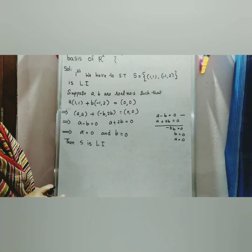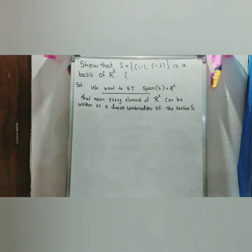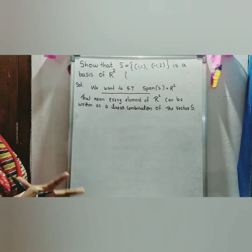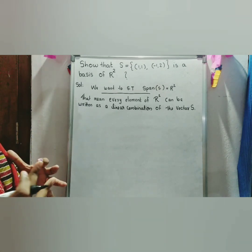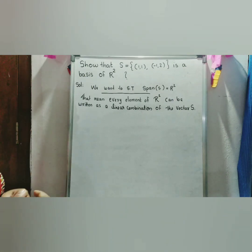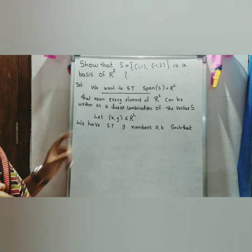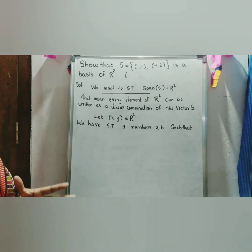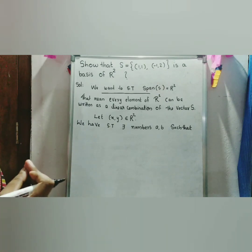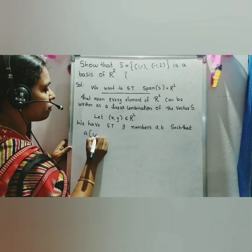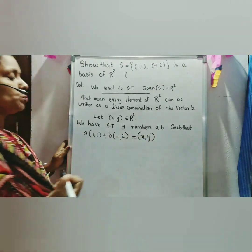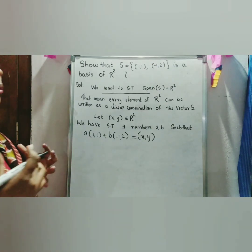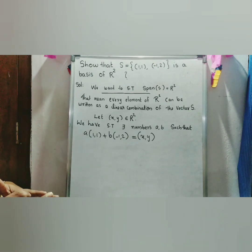Now we want to show that span of S is equal to R². That means every element of R² can be written as a linear combination of vectors in S. Let (x, y) belong to R². We have to show that there exist numbers A and B such that A·(1,1) + B·(-1,2) = (x, y).